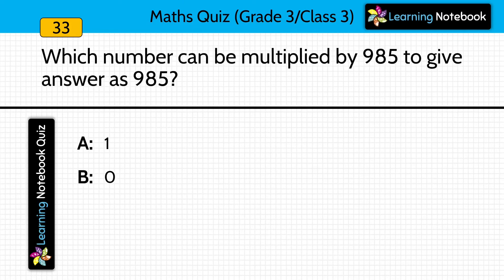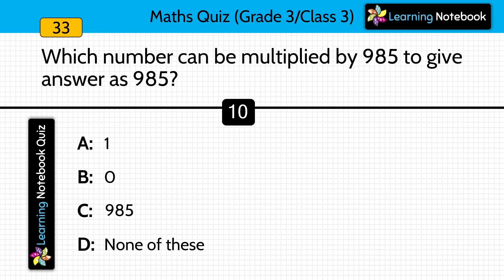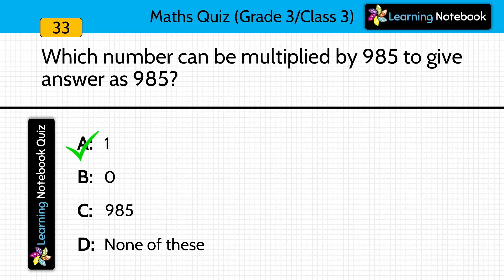Which number can be multiplied by 985 to give the answer as 985? The answer is 1. If we multiply any number by 1, we will get the answer as the number itself. So to get 985 as the answer, we will multiply 985 by 1.